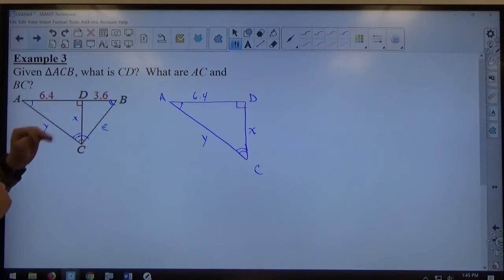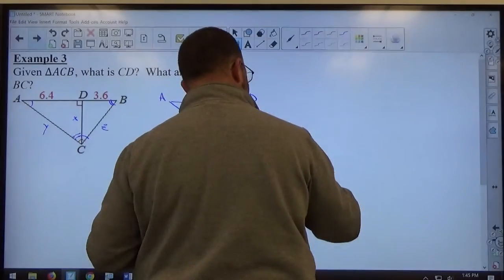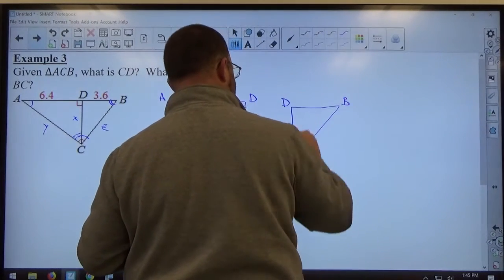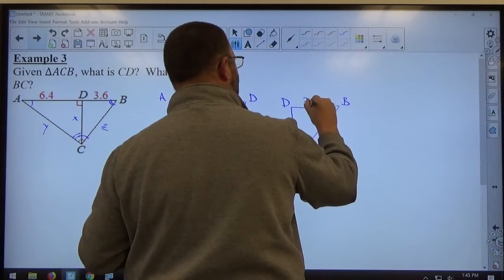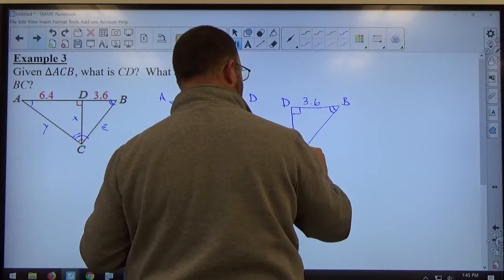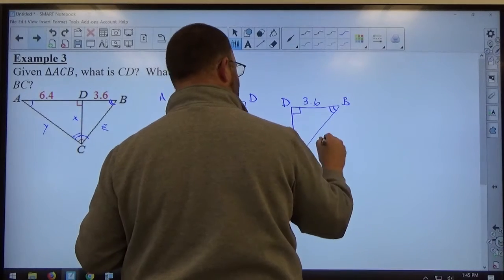And I draw BDC, same way, I'm going to take BDC, this is 3.6, this is the right angle, this has two marks, this has one mark, this is X, this is Z.